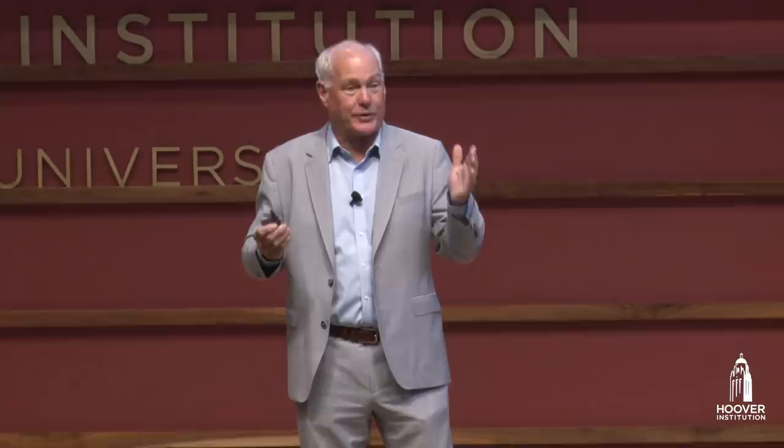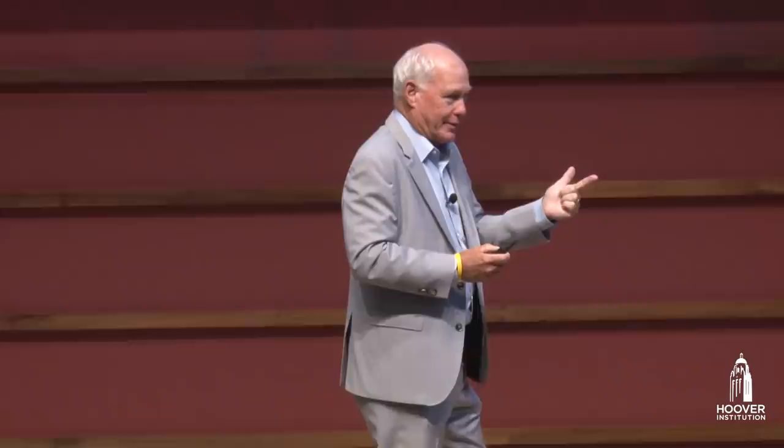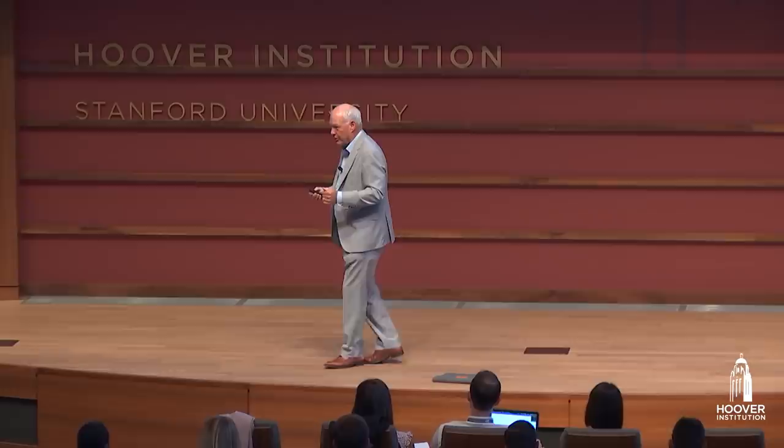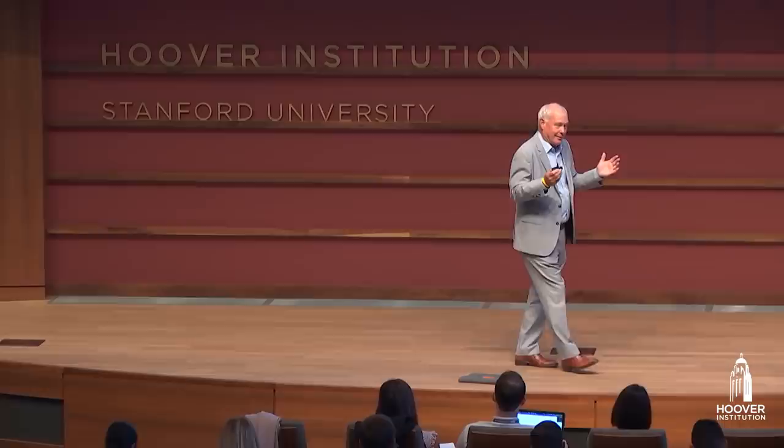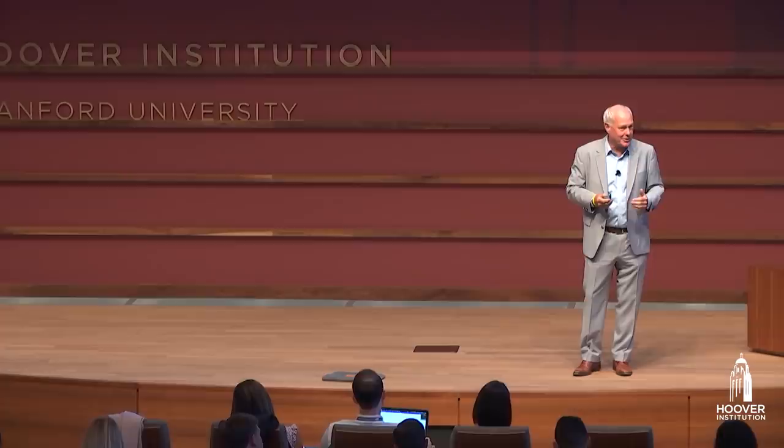Programs start out with a guesstimate of what expenditures might be, and at the end of the year, the actual cost depends on the number of people who collect benefits and the average benefit they receive. The Medicare program reimburses doctors, hospitals, and health care providers for services provided to eligible individuals — so that budget is completely open-ended. Expenditures are ultimately determined by how many people go to the doctor, enter the hospital, or use home health agencies.